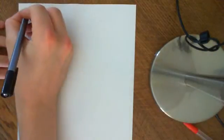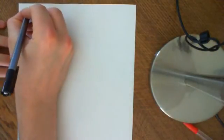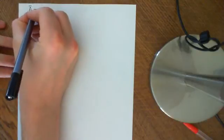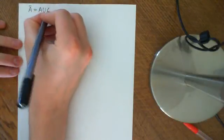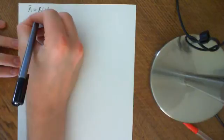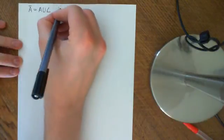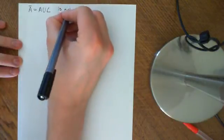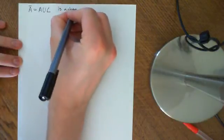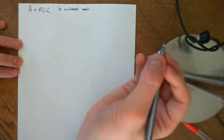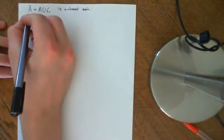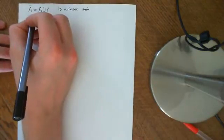Welcome back to this video in which we are trying to prove that A closure, which is defined to be A union the set containing all the limit points of A, is a closed set. The way we are going to prove this is to prove that A closure contains all its limit points.